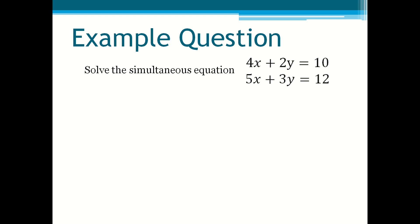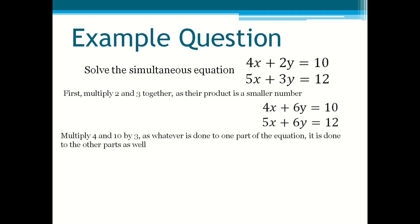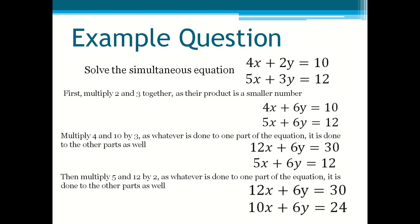The first variable we'll be calculating is the value of x. So first you multiply 2 and 3 together as their product is a smaller number. So our variables will be the same — positive 6y. Now you multiply the 4 and the 10 by 3, as whatever is done to one part of the equation is done to the other part as well. So the first equation becomes 12x + 6y = 30, and the bottom equation becomes 10x + 6y = 24.